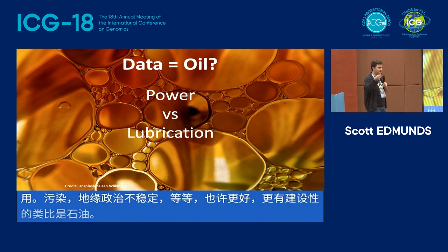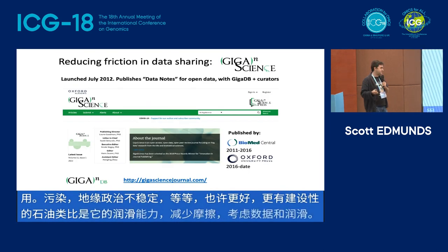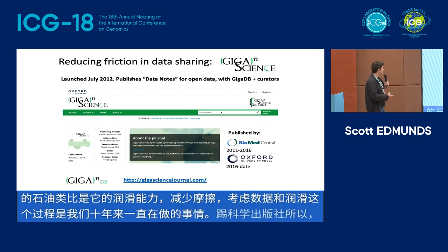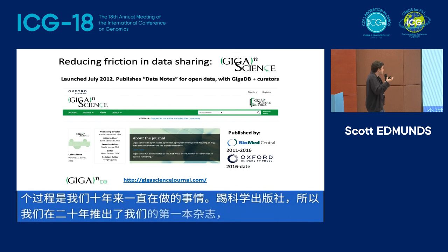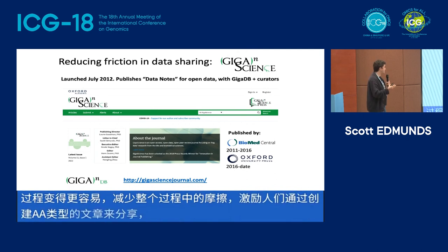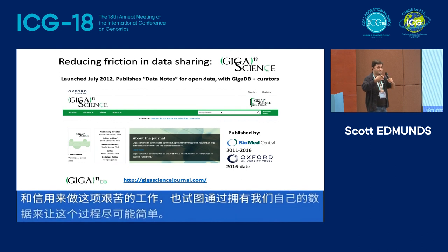Thinking about data and lubricating this process is something that we've been doing for a decade now at GigaScience Press. We launched our first journal in 2012, really to try to make the process of sharing data much easier — to reduce the friction — incentivizing people to share by creating a type of article, a data note, that gives people credit for doing this hard work, and also by having our own data repository and data team on hand to help researchers share their data.